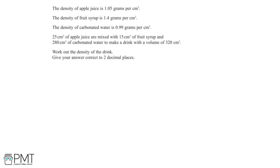In this question, we are told that the density of apple juice is 1.05 grams per centimetre cubed, the density of fruit syrup is 1.4 grams per centimetre cubed, and the density of carbonated water is 0.99 grams per centimetre cubed. We are told that 25 centimetre cubed of apple juice is mixed with 15 centimetre cubed of fruit syrup and 280 centimetre cubed of carbonated water to make a drink with a total volume of 320 centimetre cubed.